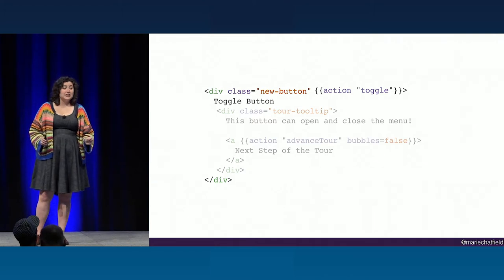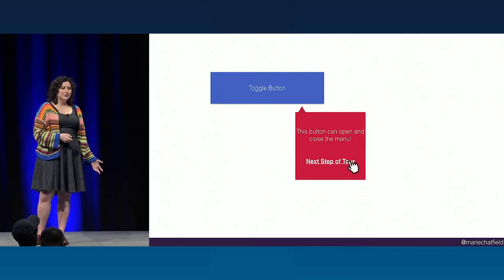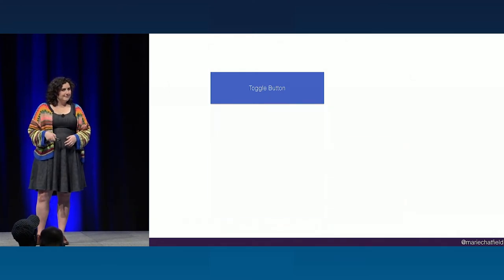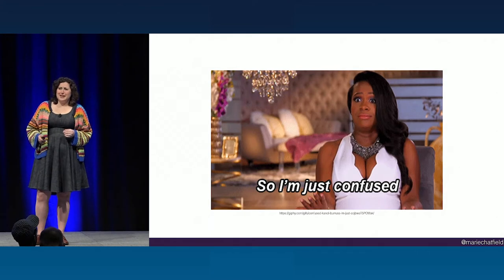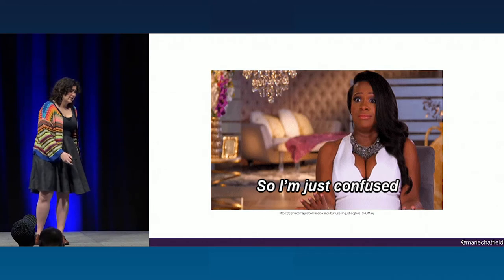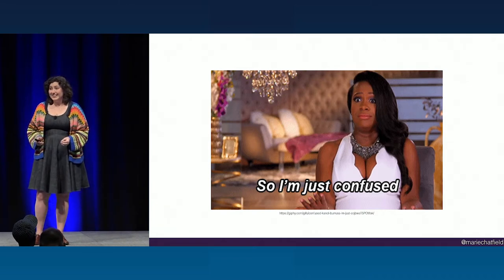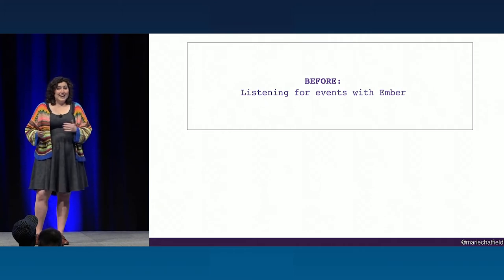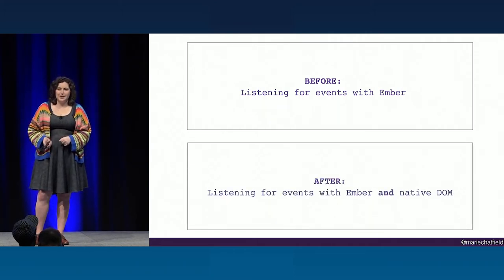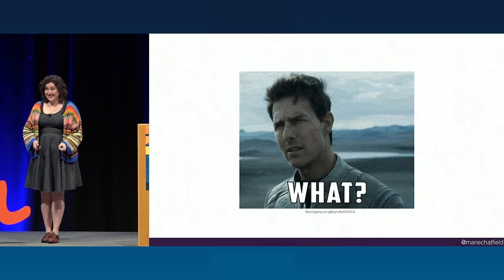Let's take a look at the code change that ruined my life. That's it — that was the only thing that changed. The user clicks the button to advance the tour, the menu opens, and then the menu shuts — which is not what I expected. This kicked off about 72 hours of me debugging madly: looking at stack traces, reading Ember source code, making Ember twiddles, doing flowcharts on paper. The result was that I realized that before, I had been exclusively listening for events with Ember, and after, I was listening for events with a combination of Ember and the native DOM.